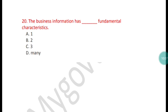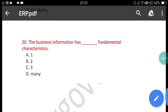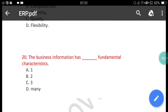Question 20: Business information has how many fundamental characteristics — one, two, three, or many? The correct answer is three. Business information has three fundamental characteristics. Thank you so much for watching this video.